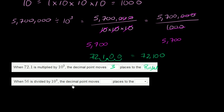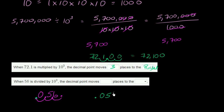When 56 is divided by 10 to the third, the decimal point moves how many places in which direction? Dividing by 10 to the third is the same as dividing by 10 three times, making a smaller number. 56 has an implicit decimal point: divide by 10 once → 5.6; divide again → 0.56; divide again → you move the decimal left once more, giving 0.056. The decimal point moves three places to the left.